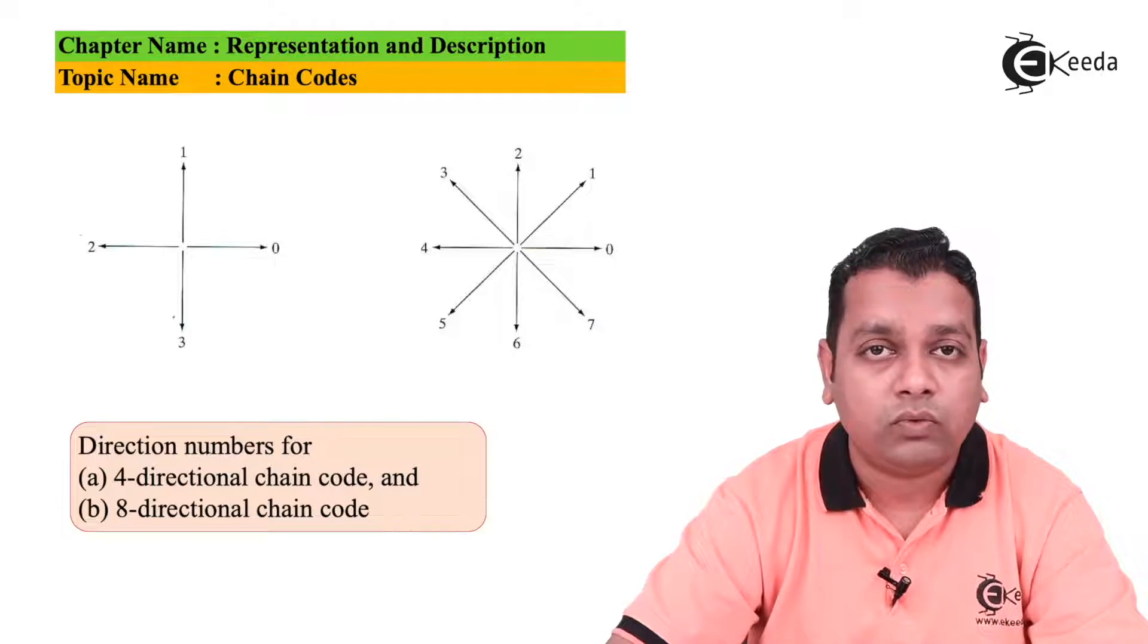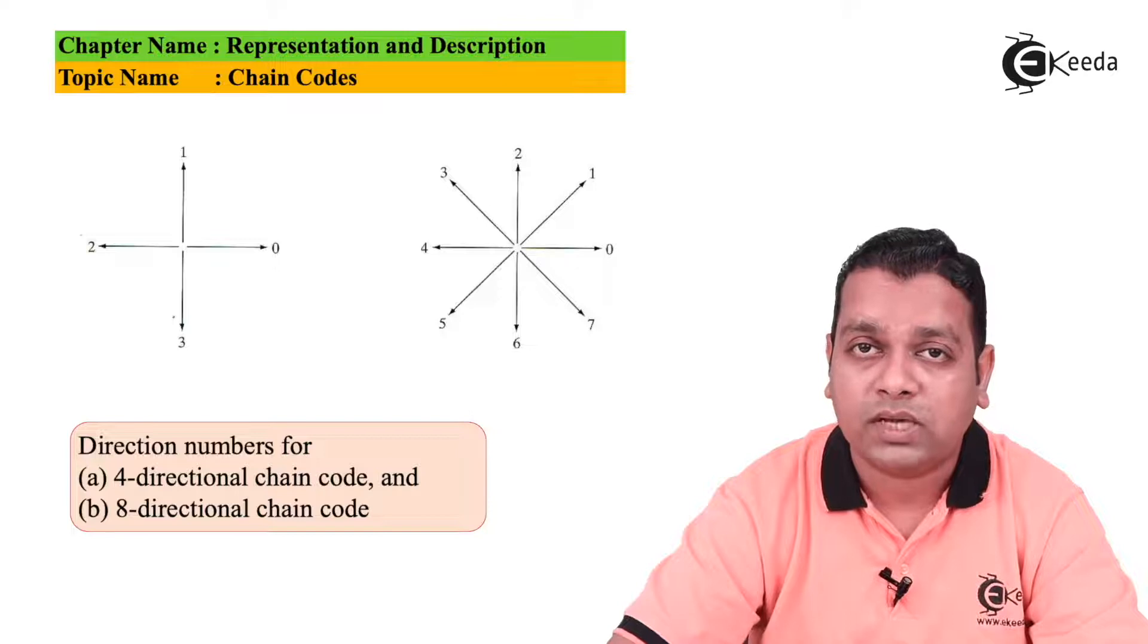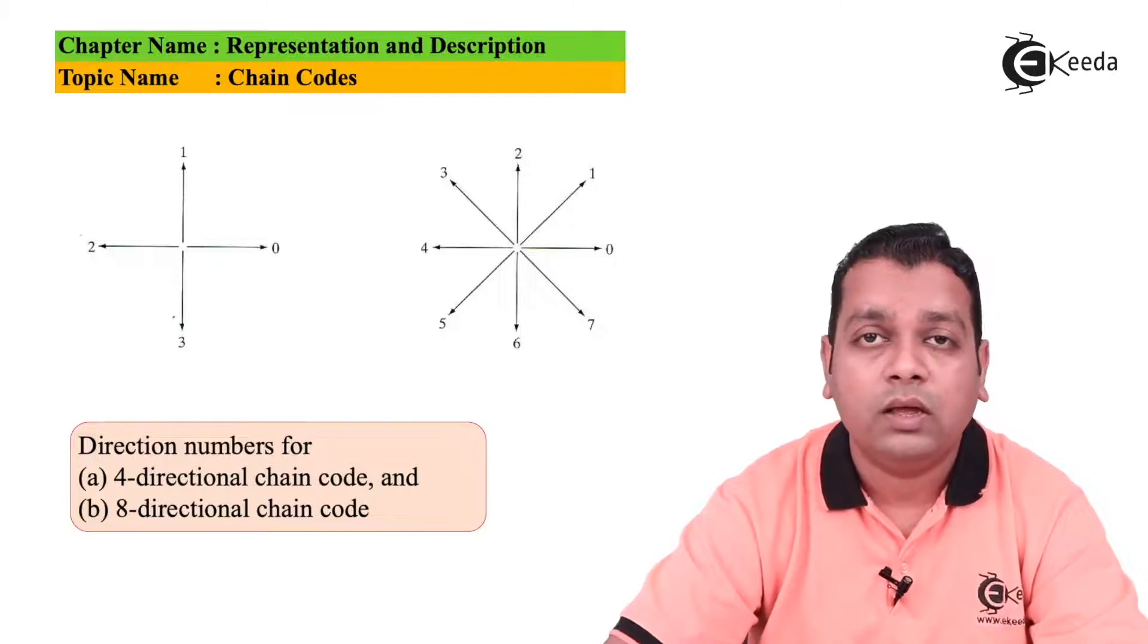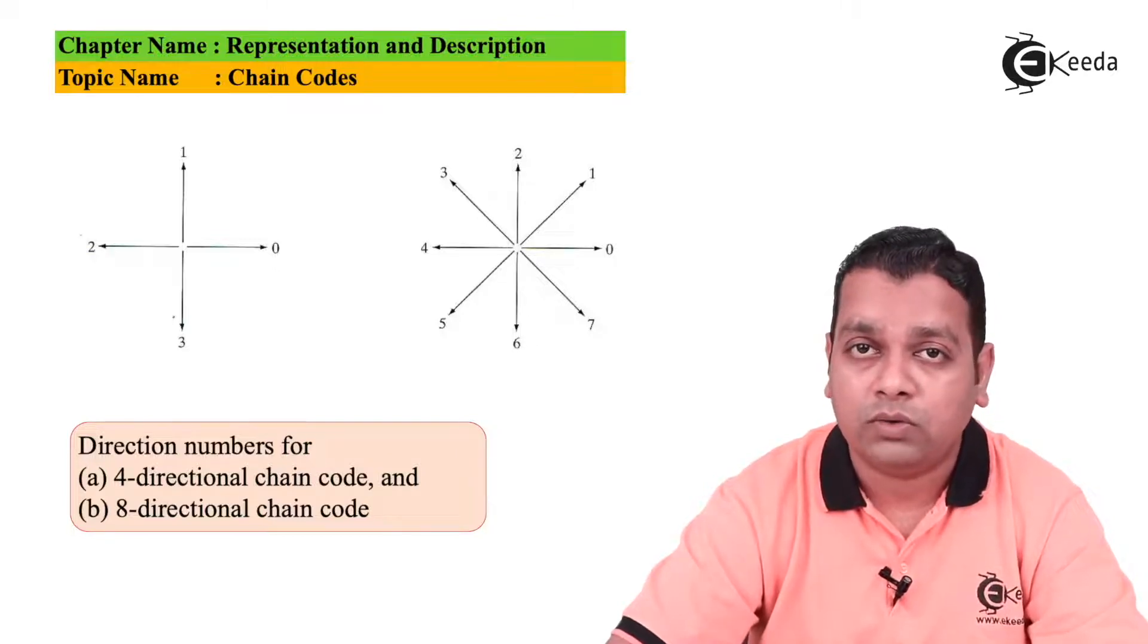This is the four directional chain code pattern. On the right hand side, we start at zero. On the upper side, we have the number one. On the left hand side, we have the number two. And downwards, we have the number three.